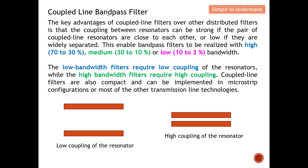A key advantage of this coupled-line filter over other distributed filters is the coupling between resonators, which can be either strong or weak. For strong coupling, the pair of coupled lines needs to be very close to each other. For low coupling, they need to be further separated. With low coupling, the coupled lines are spaced further apart, so less energy is coupled over, resulting in a smaller bandwidth.